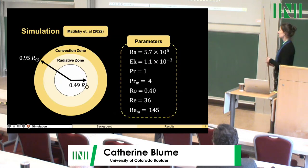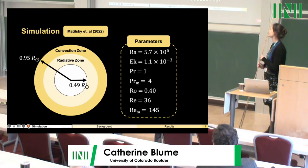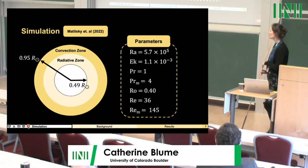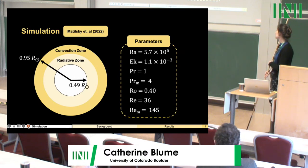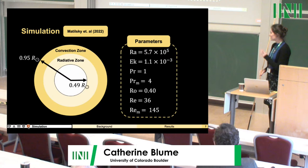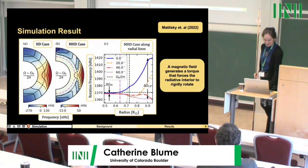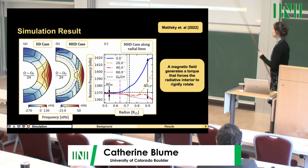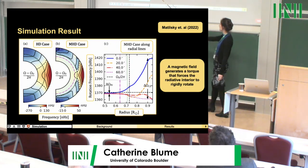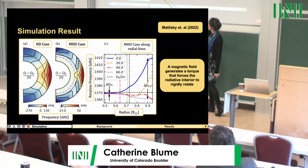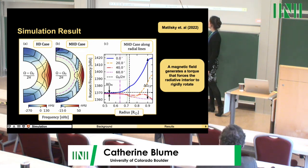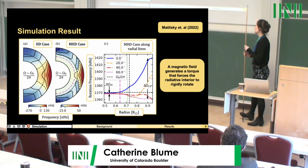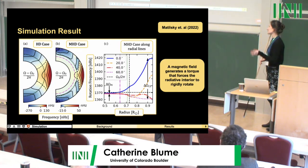I'm running Lorentz simulations. It is a simulation that runs the upper radiative interior coupled through the convection zone from half a solar radius out to almost the photosphere. The main result from Lauren's work is that in the hydrodynamic case, you have differential rotation in the convection zone and also in the radiative interior, whereas in the MHD case, the convection zone is still differentially rotating, but the radiative interior is rotating more or less like a solid body. This is because the magnetic field is generating a torque that forces the radiative interior into solid body rotation.